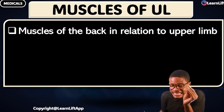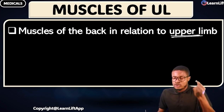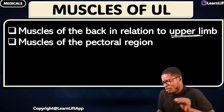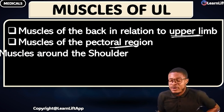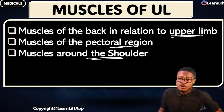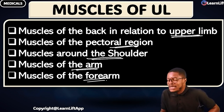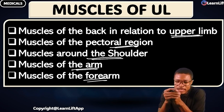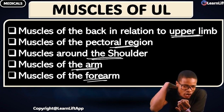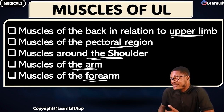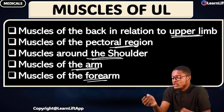The five parts we're going to cover: number one, the muscles of the back in relation to the upper limb. After that, the muscles of the pectoral region — that's the breast region. Then the muscles around the shoulder. Then muscles of the arm, and finally muscles of the forearm, also called the antebrachium.